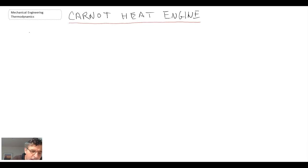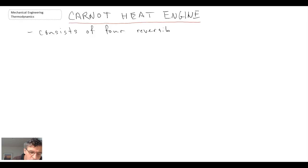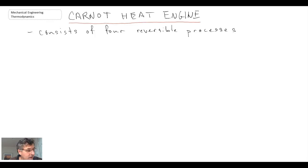The Carnot heat engine consists of four reversible processes, and we'll take a look at it on a PV diagram.